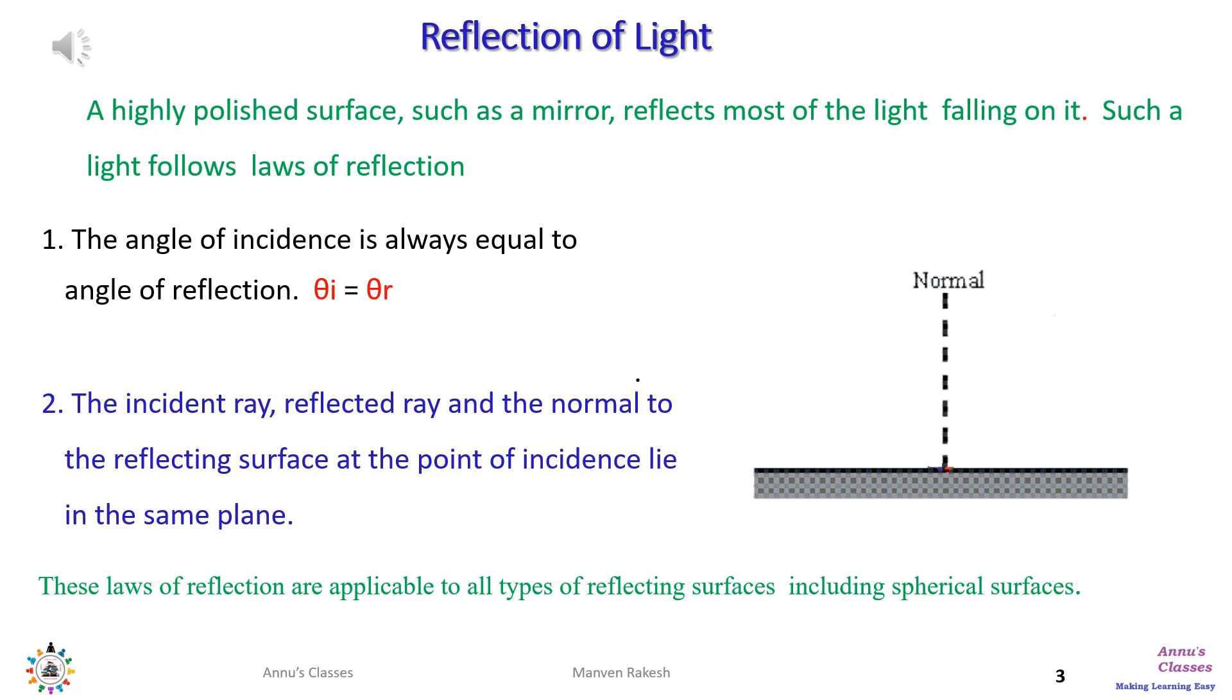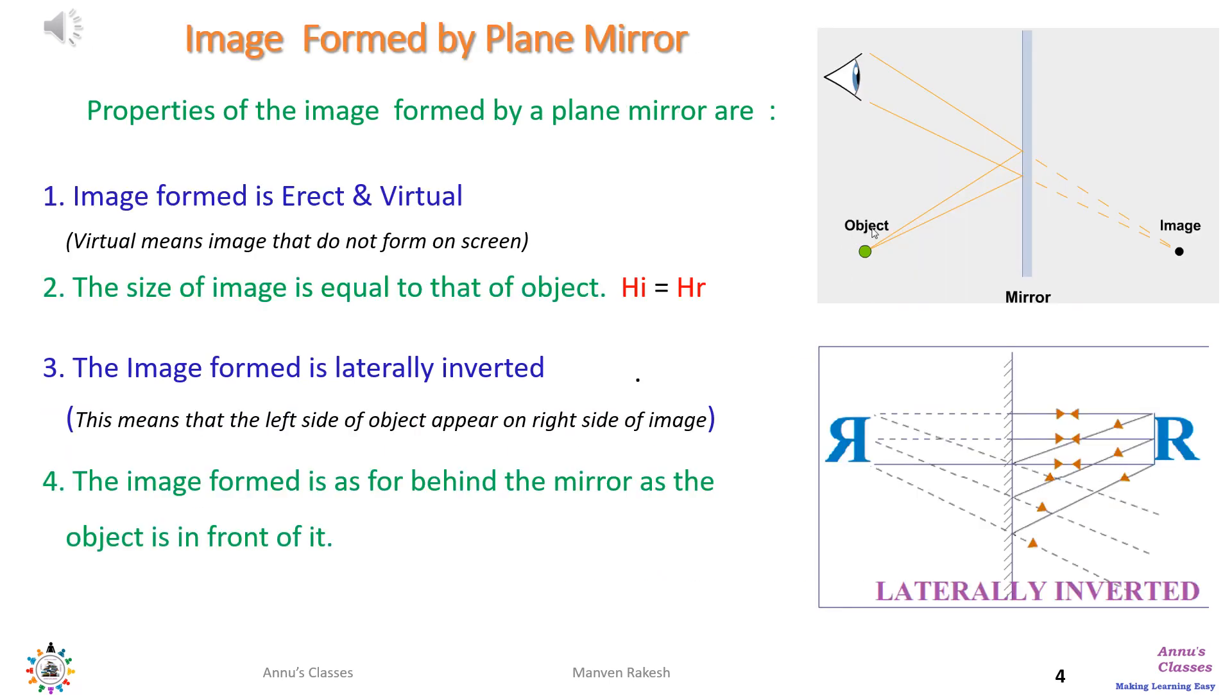The four properties of image formed by a plane mirror are: number one, image formed is erect and virtual. Number two, size of the image is equal to that of the object. Three, image formed is laterally inverted. Four, image formed is as far behind the mirror as the object, that is the distance of image equals distance of object from the mirror.